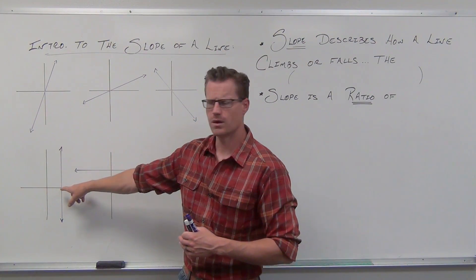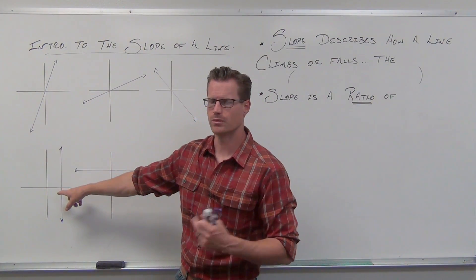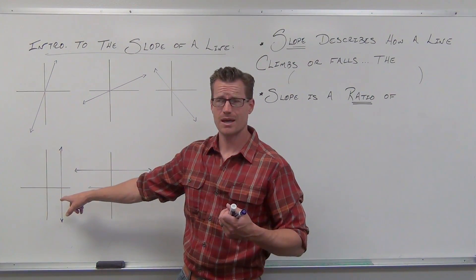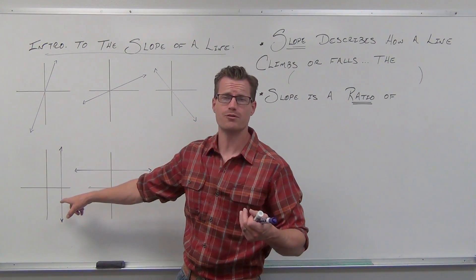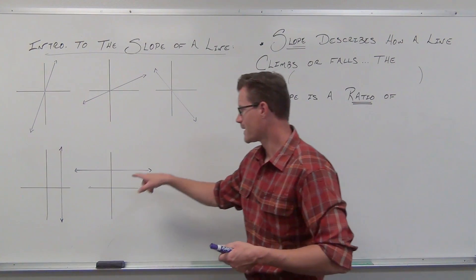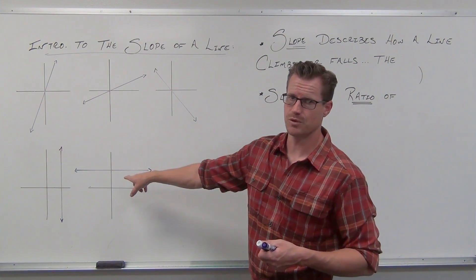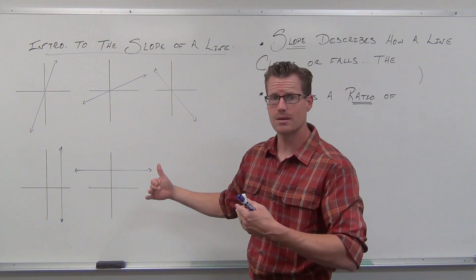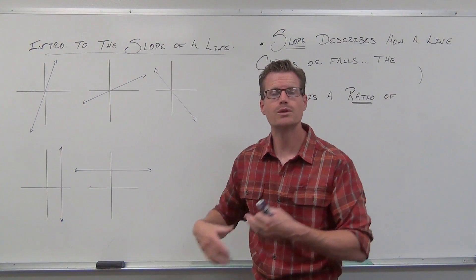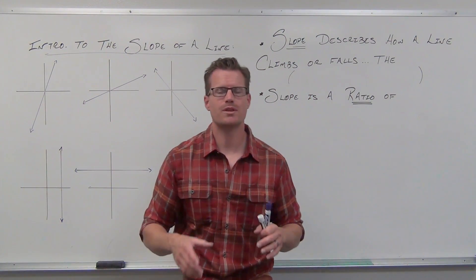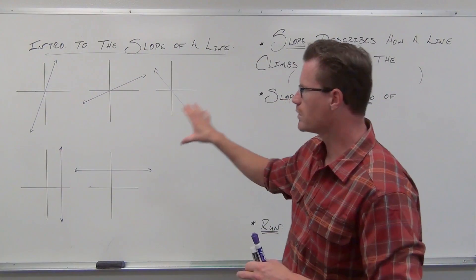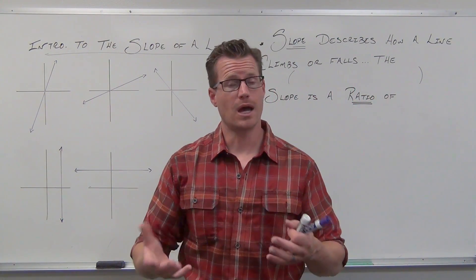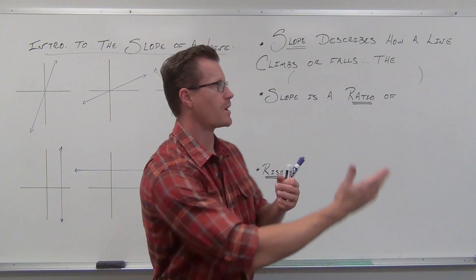This line is falling or decreasing as we move from left to right. And this vertical line — what's that doing? Is it climbing? Is it falling? Are we even moving from left to right? It's a weird question. It's moving left to right, but it's not doing either. The slope describes the situation in all of these lines — how the graph climbs or falls as we move from left to right.